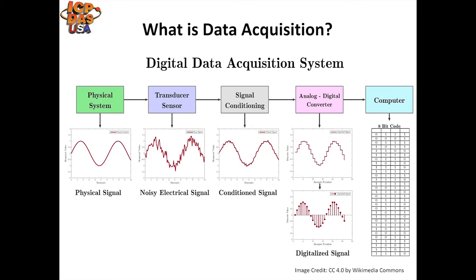In a nutshell, data acquisition is just taking real-world conditions — such as a change in temperature — and converting that into an electrical signal. We then convert it with the DAQ module into a digital signal that the computer can read, and then you log it on your PC or controller in a form that is human readable. It really is that simple.